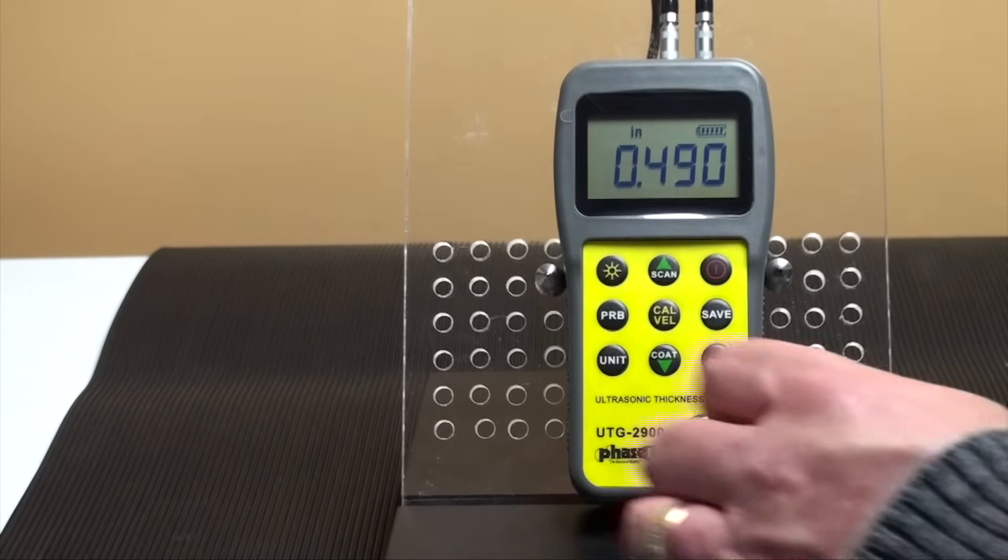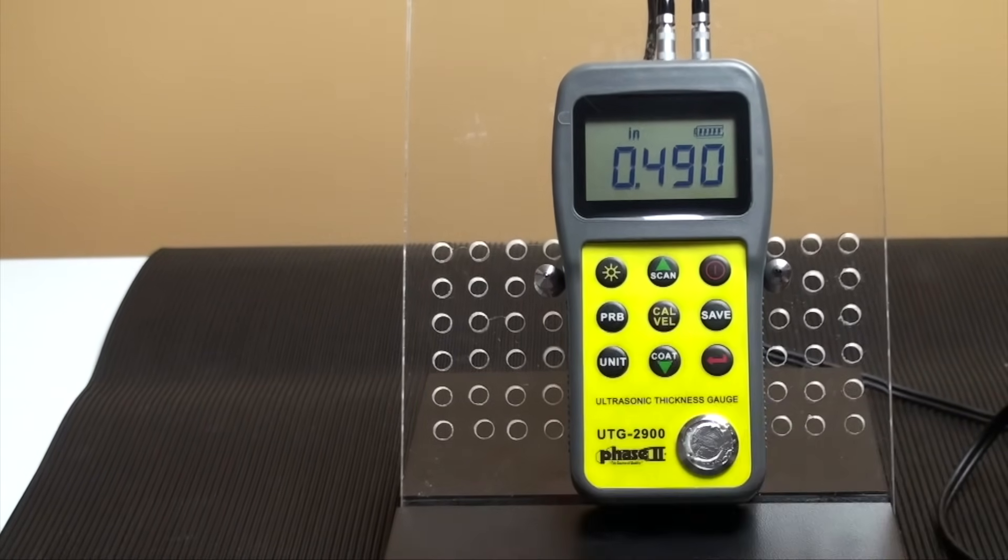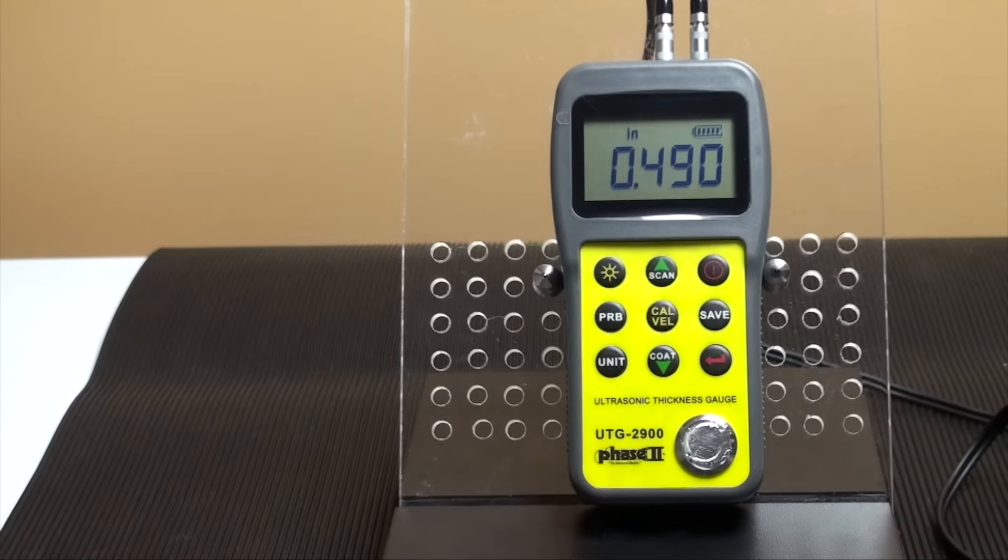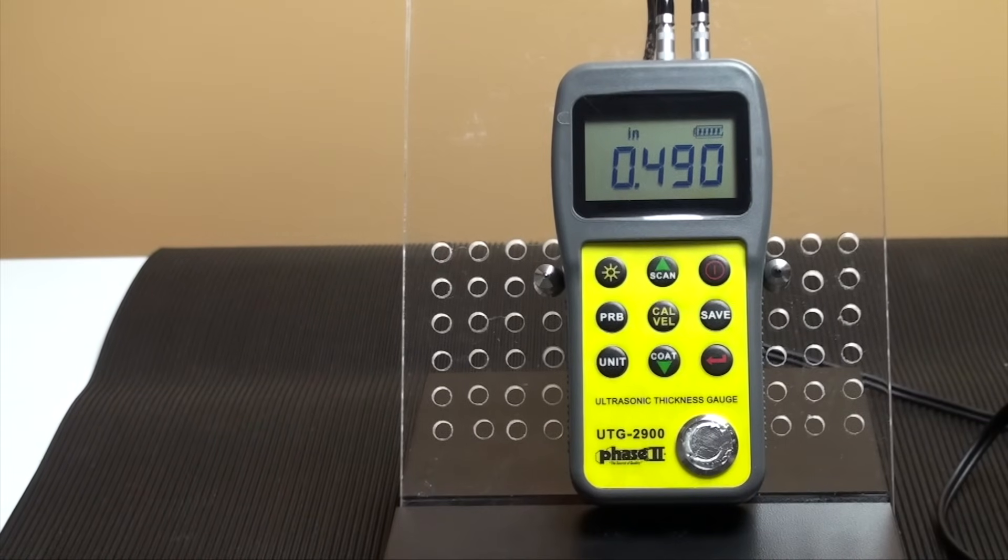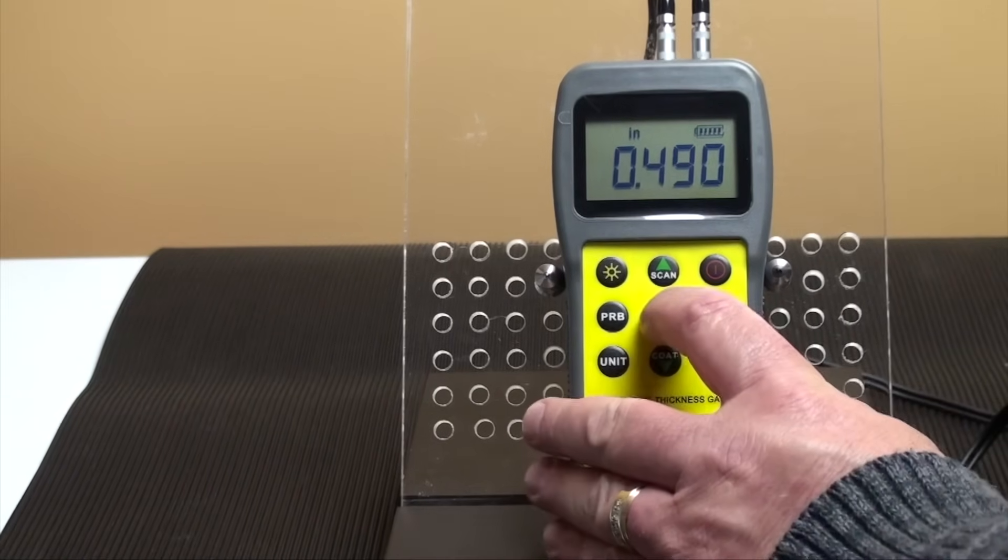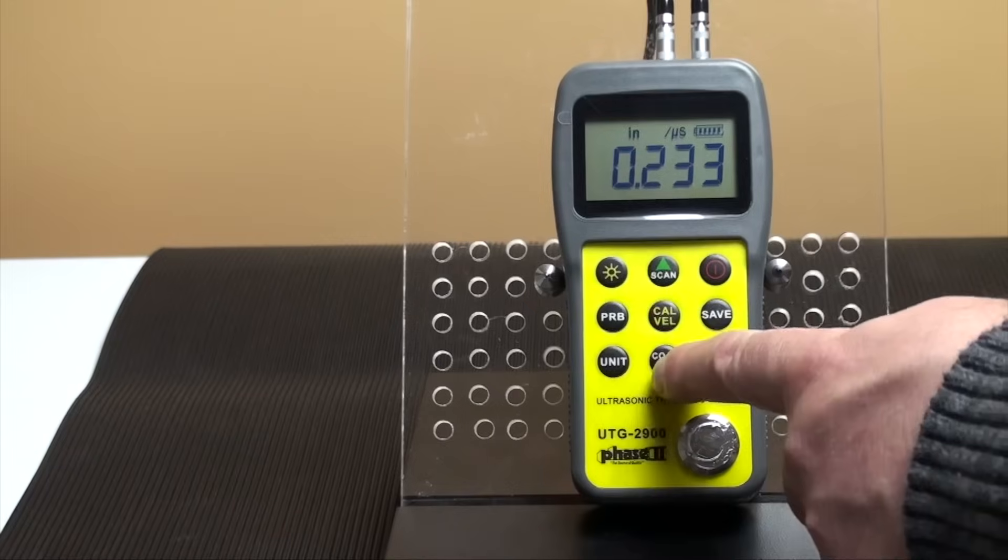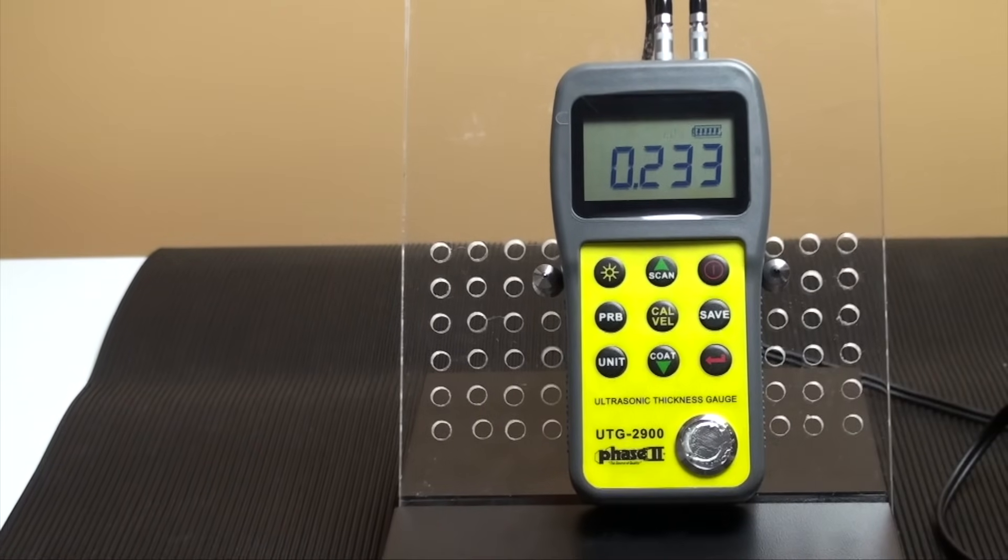Pressing the unit key will allow you to toggle back and forth between inch and metric. Note that the unit setting will determine how the velocity setting is shown. To set velocity setting, press the velocity key twice and use the up and down arrows to choose the correct setting. A general purpose chart is supplied in the manual for reference.